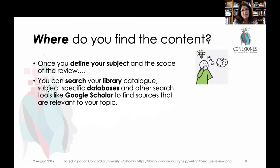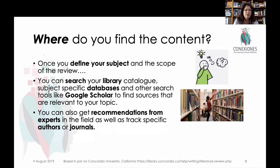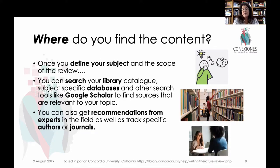Your search can begin at your university library or public library in their online formats, or in databases like ProQuest or other journal databases. You might start with something familiar like Google Scholar, which is like a Google search but limited to peer-reviewed information. Once you have a firm foundation of who the top people in your field are, you might seek recommendations from those experts directly. You can also follow specific authors or track a specific journal that has many articles related to your topic.